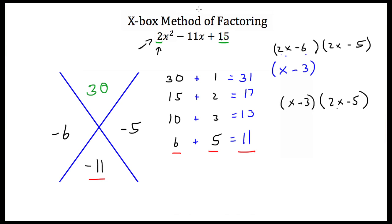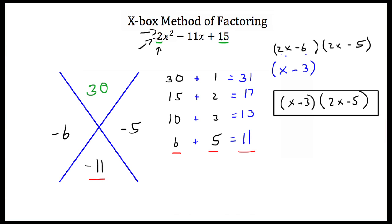If you FOIL this out, you'll get 2x squared minus 11x plus 15. In fact, if you ever have a coefficient other than 1 in front of your x squared, that's a clue that you're going to have to reduce one of your binomials, if not both of them.